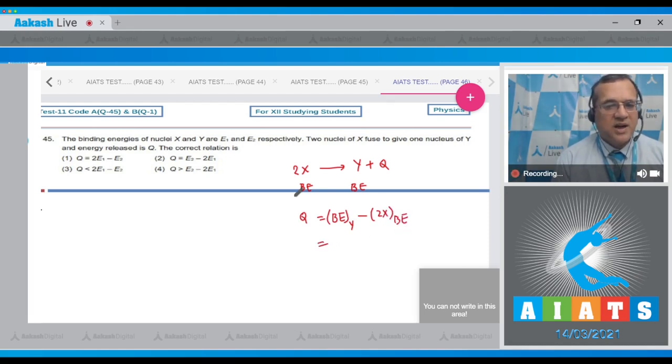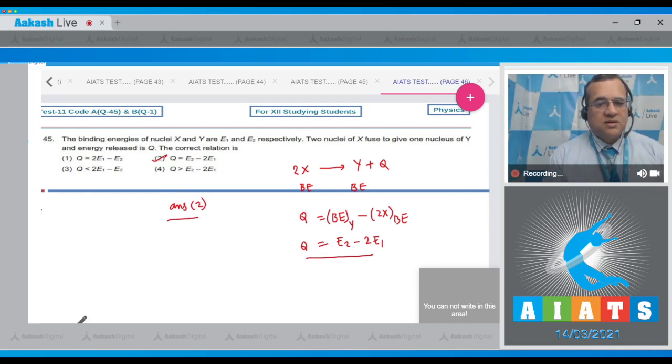The binding energy of Y is E₂, and two X nuclei are used with binding energy E₁ each, so Q = E₂ - 2E₁. The correct option is option 2. Thank you very much for watching, keep watching and keep working.